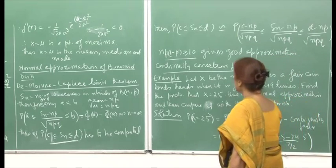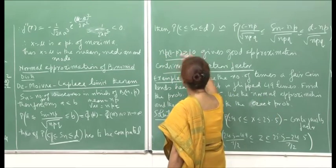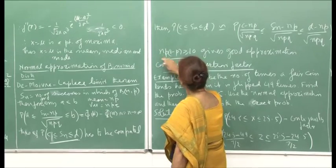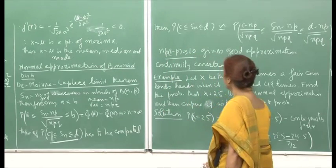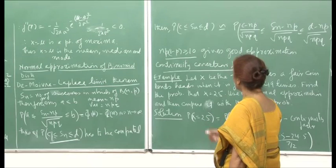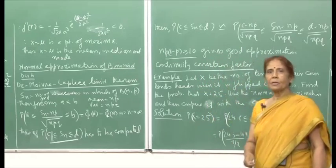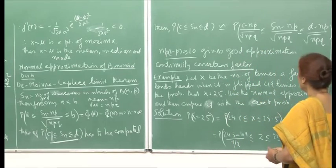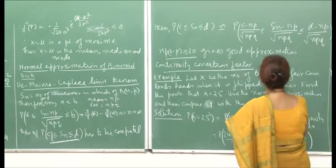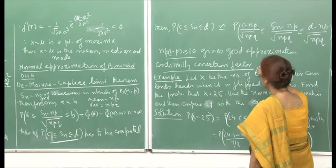This approximation is good as long as np(1 − p) ≥ 10. That means you do not require very large values of n, but as long as this number is larger than 10, you get a better approximation. You can experiment with problems where you try to increase the value of n and see that the estimate will improve. Now, there is an important aspect to this approximation, and that is the continuity correction factor.